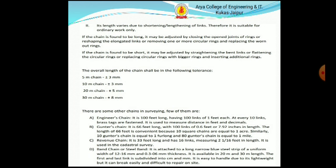If the chain is found to be long, it may be adjusted by closing the opening joints of rings or reshaping the elongated links or removing one or more circular rings and replacing the worn out rings. If the chain is found to be short, it may be adjusted by straightening the bent links or flattening the circular rings or replacing circular rings with bigger rings and inserting additional rings.